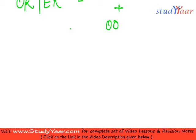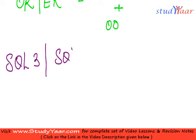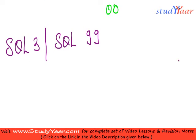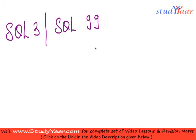First, we are going to study the SQL3 standard, which is also known as the SQL99 standard, because that was the year in which it was introduced. This standard incorporates some features of object-oriented databases, and we are going to understand these features — what they are and how we can use them in SQL.